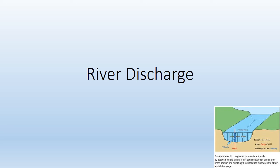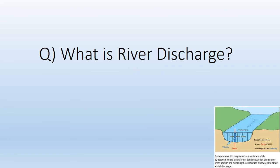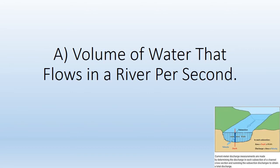River discharge. What is river discharge? It is the volume of water that flows in a river per second.